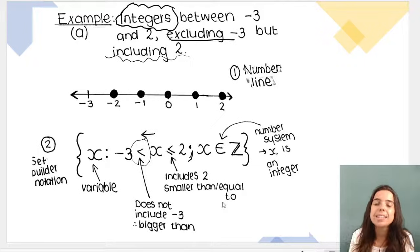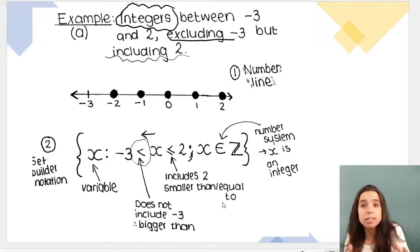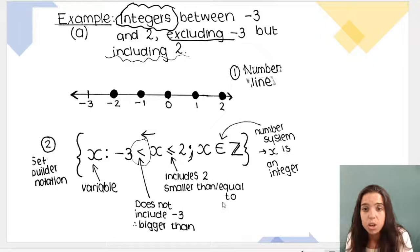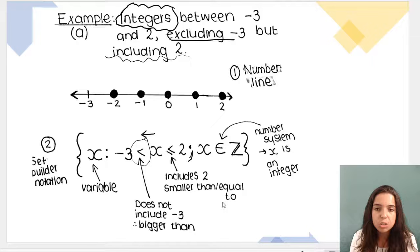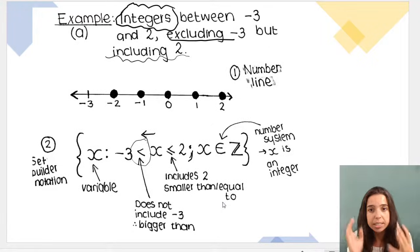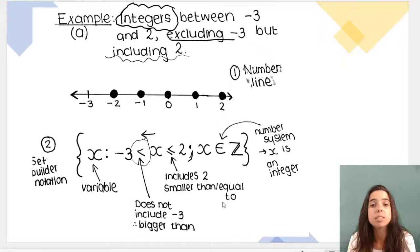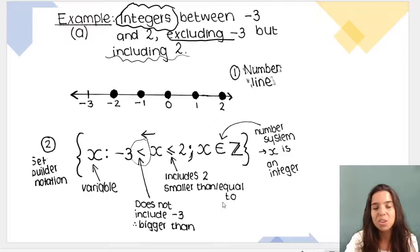Then we do a semicolon like this, and we just end off by telling the number system. We say that x is an integer, x is an element of integers. So x is a member of or an object of that number system, that set of numbers, that subset of real numbers. Let's do another example.